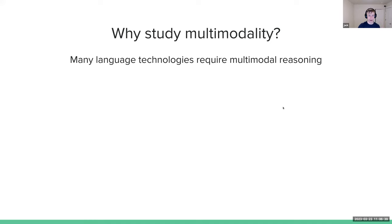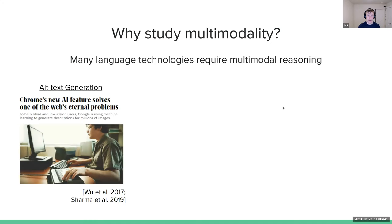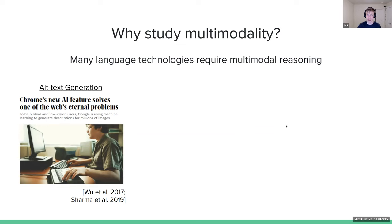One cool example is alt text generation. The idea is that there are people who can't access web images, either because they're low vision or blind, or because they live in a location without fast enough internet access to load images. The goal is to generate descriptions that give the same experience to people who can access the images and those who can't.